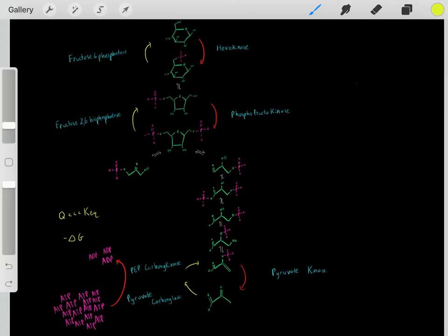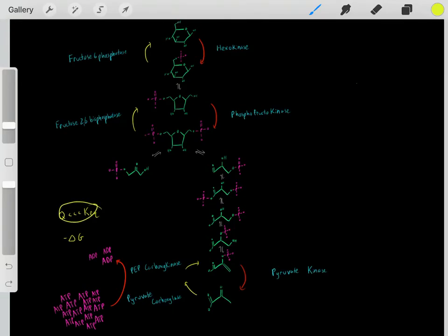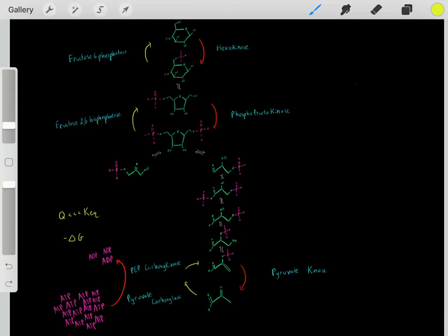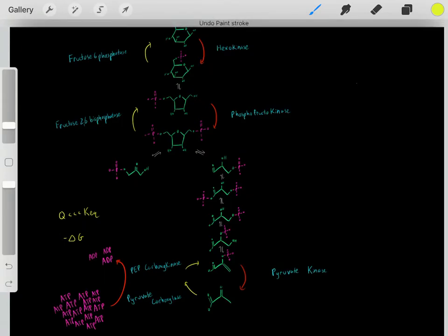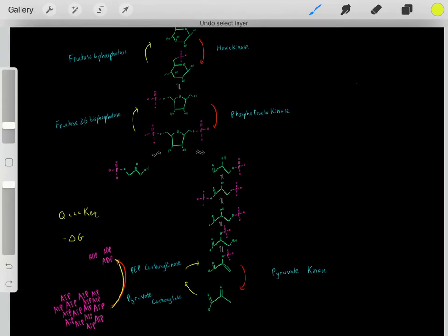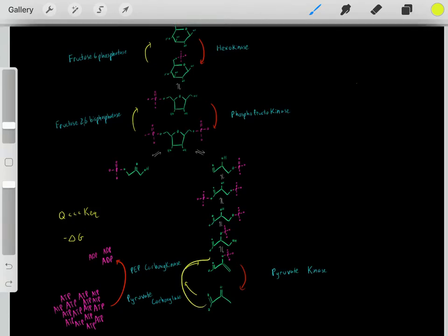The reaction quotient is very far from equilibrium concentrations, so this has a very negative delta G—it's very thermodynamically favorable—and strongly drives the reaction in this direction, forming the needed compound.